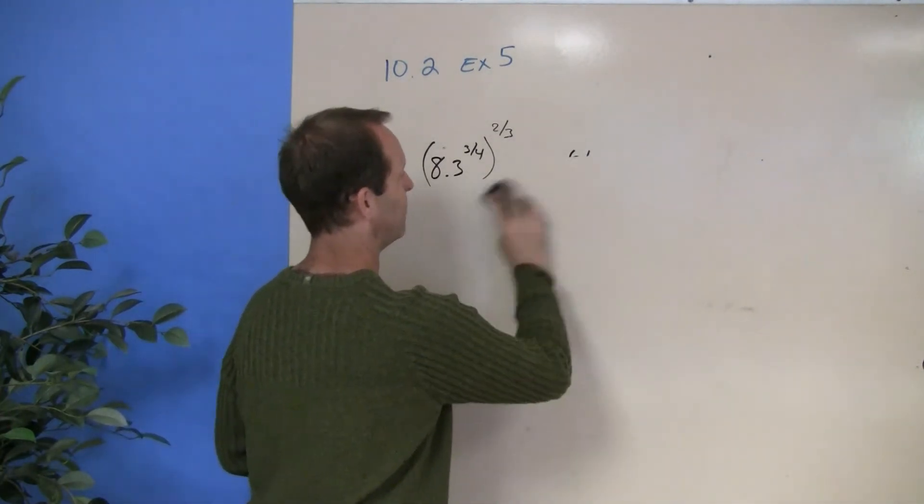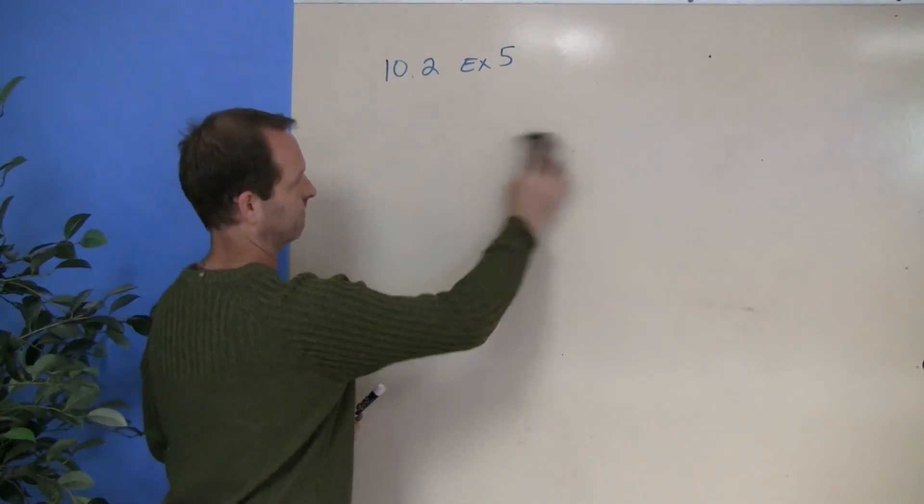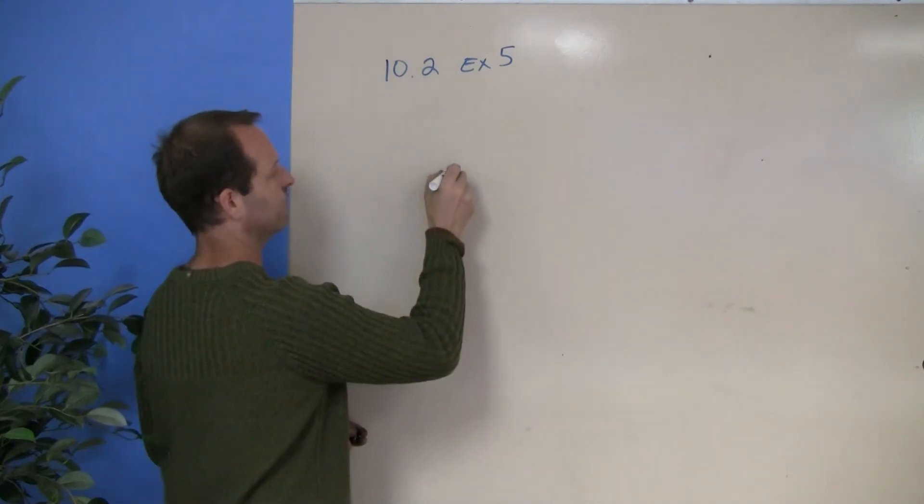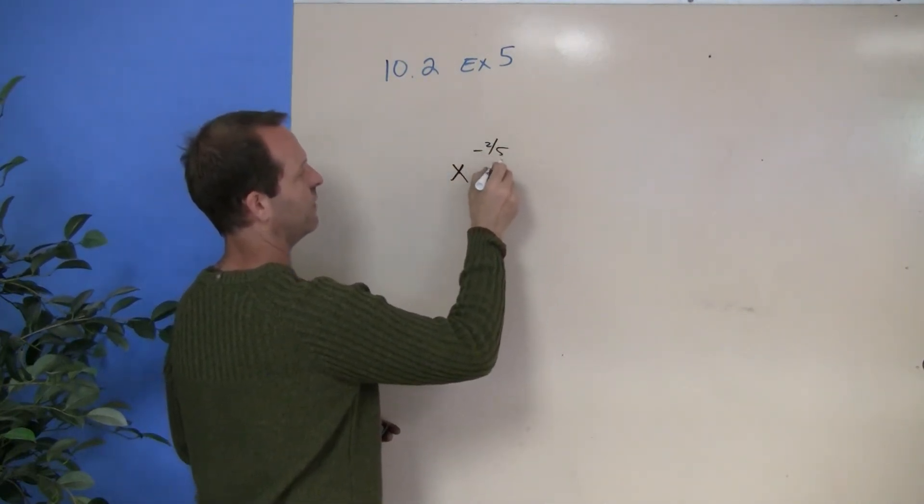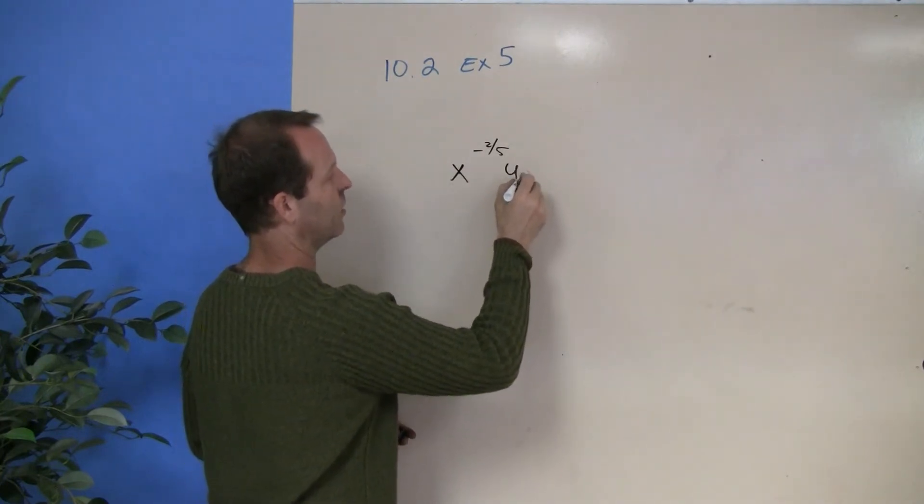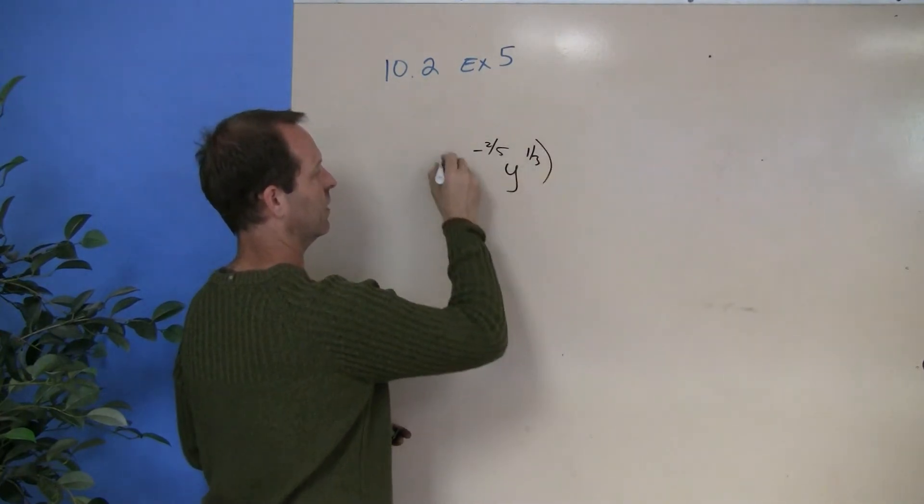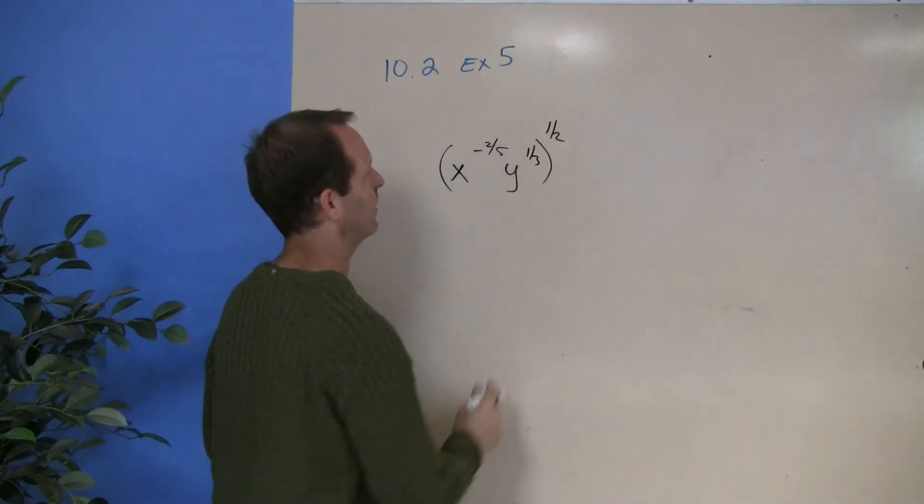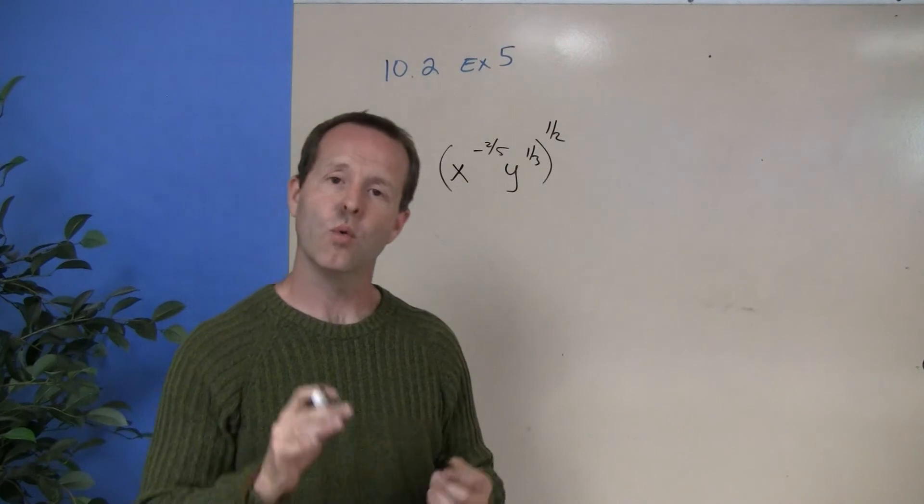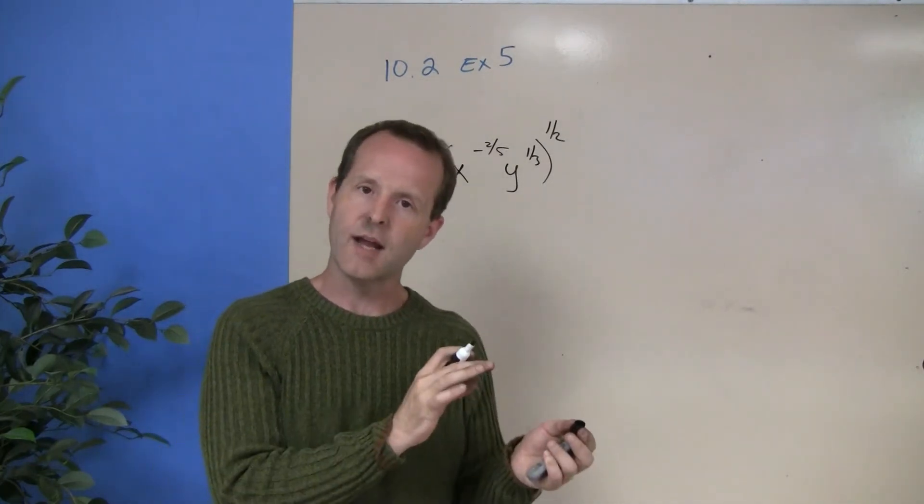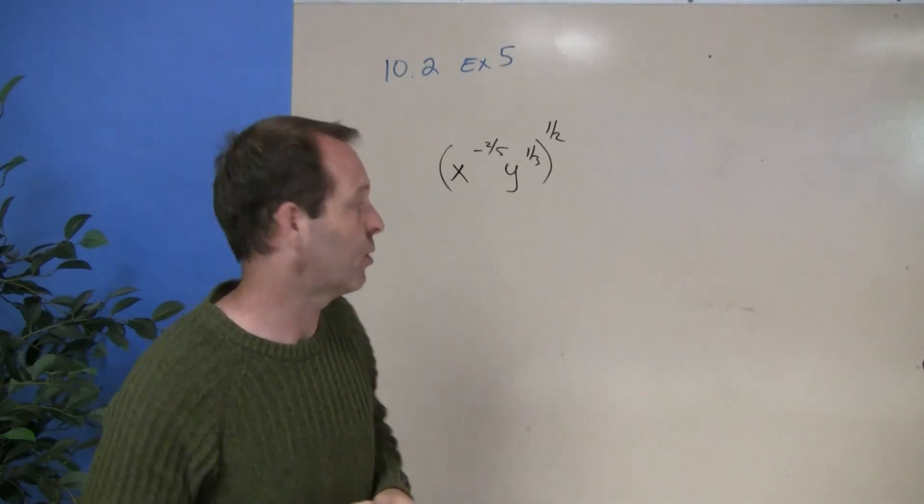And the one last example, let's say we have x to the negative 2/5ths, y to the 1/3rd, all to the 1/2. Looks like I've got a whole bunch of things going on here. Well, if we just do it one chunk at a time, I think we'll all be successful with this problem.